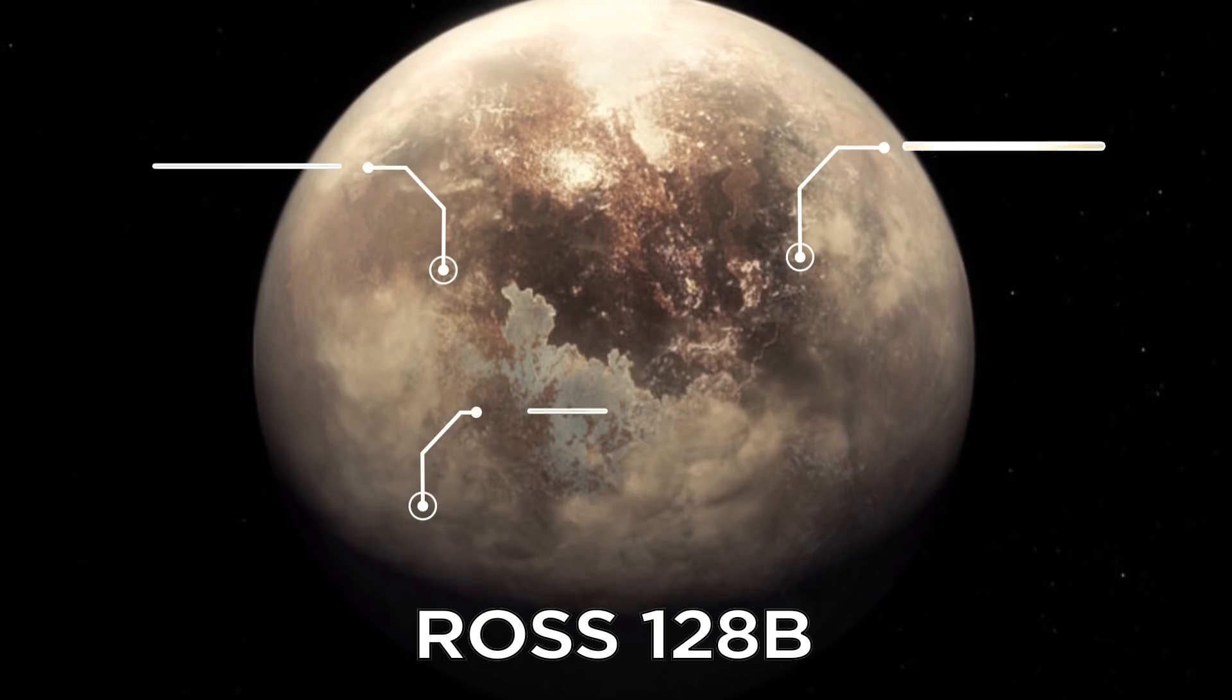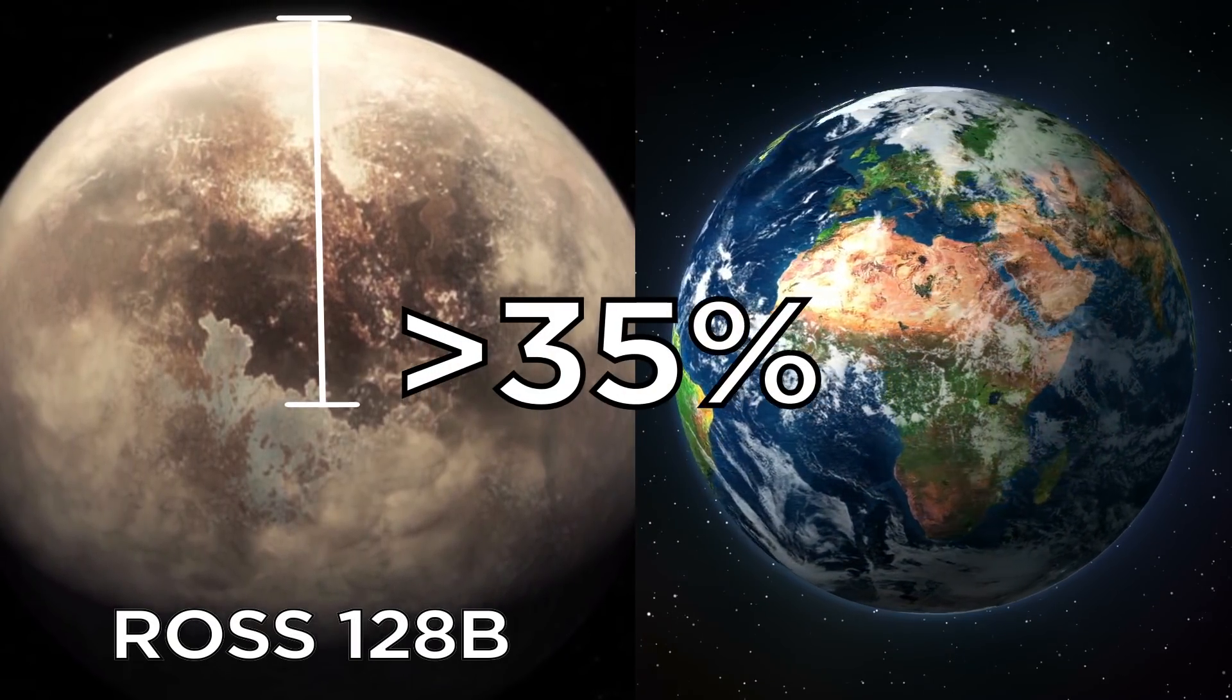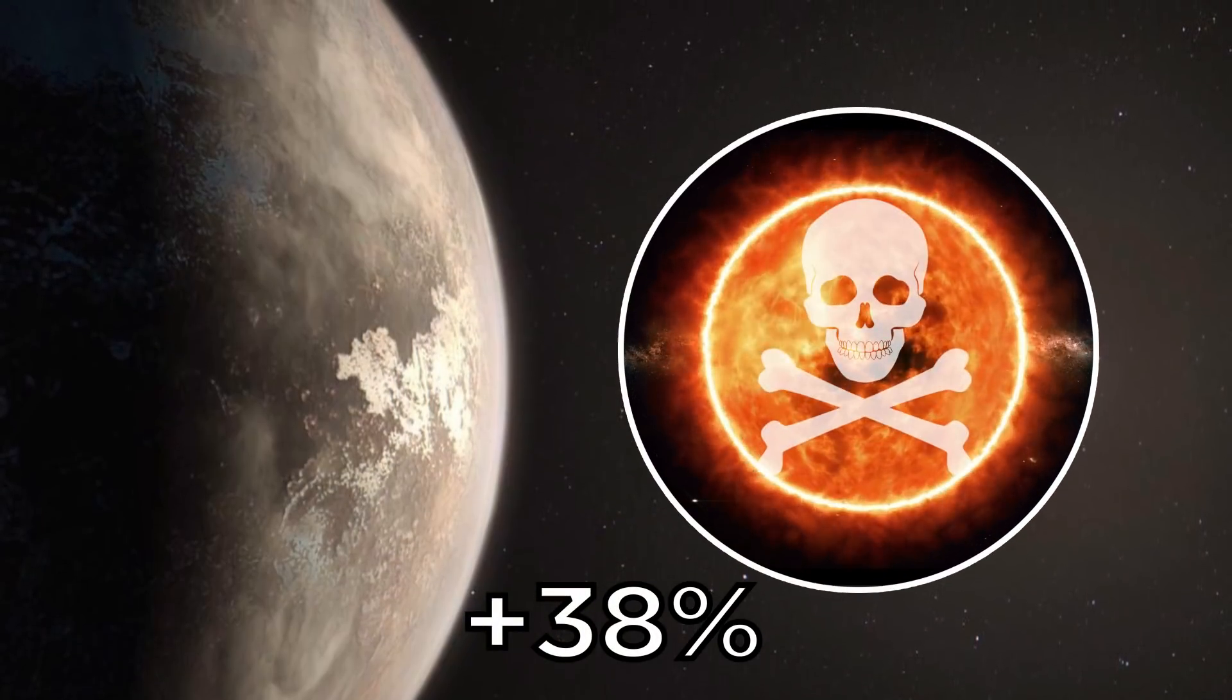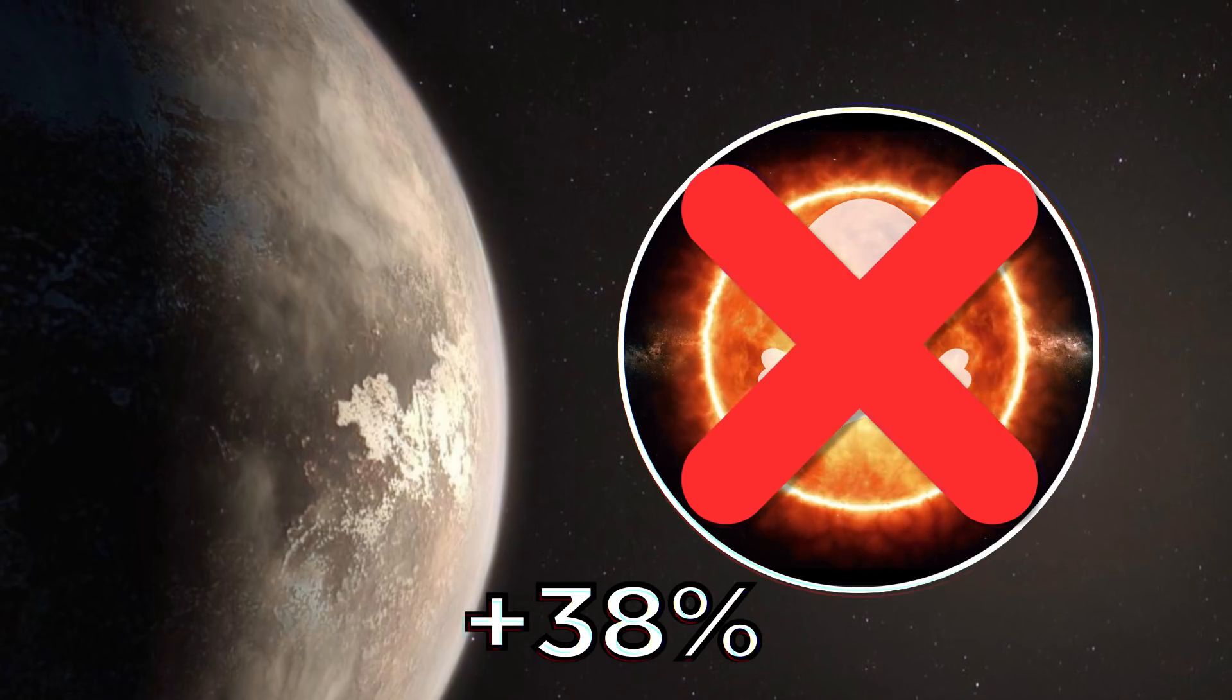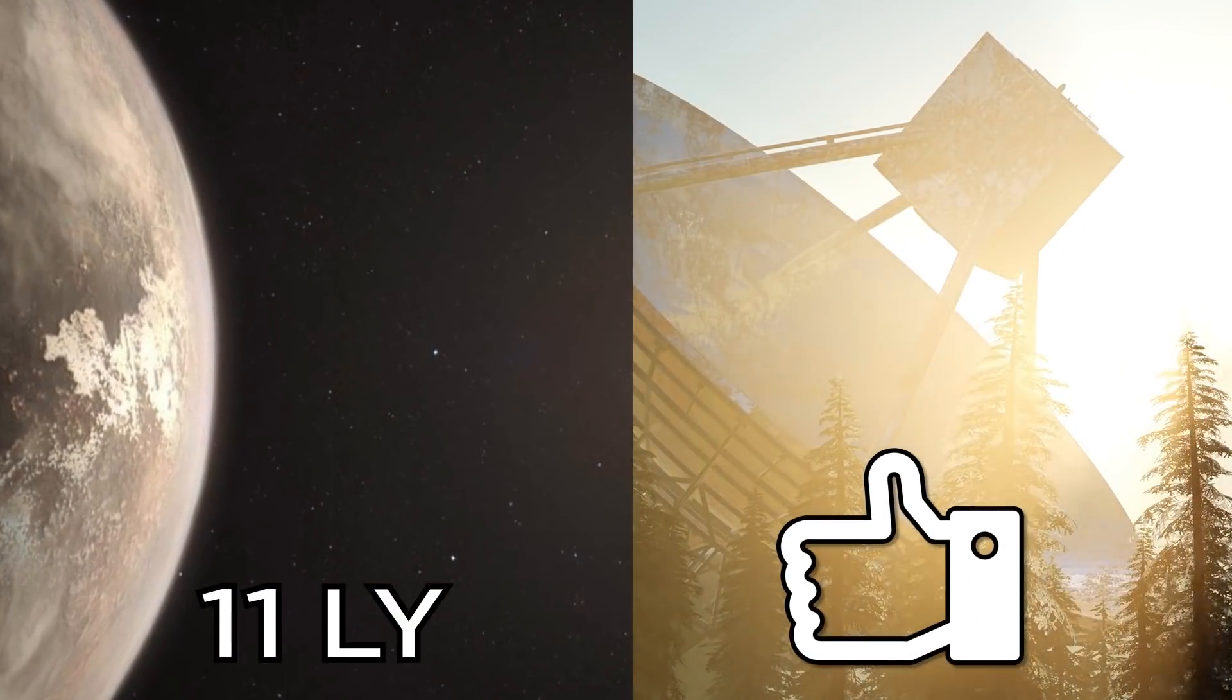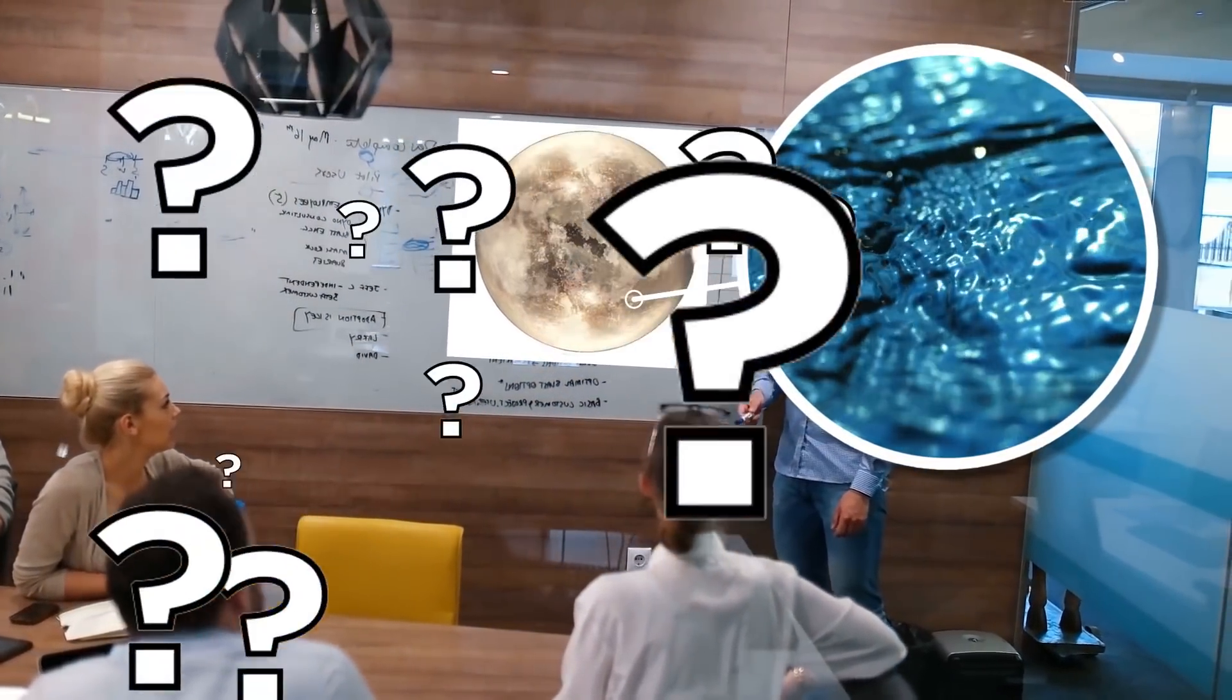Ross 128b is just 35% bigger than Earth, only receives 38% more sunlight, and orbits a quiet star that doesn't let out deadly solar flares. It's 11 light years away, but it's a relatively close planet to keep an eye on, especially if scientists could confirm whether it has liquid water or not.